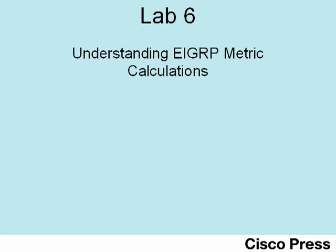Hello and welcome to ICND2 Lab 6, Understanding EIGRP Metric Calculations. This lab shows how to change some of the settings on interfaces, particularly the bandwidth and delay settings, to influence the route that EIGRP chooses.